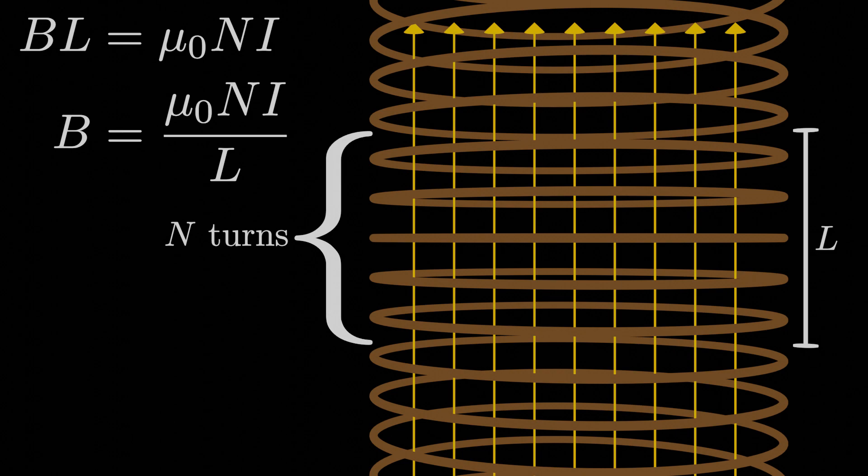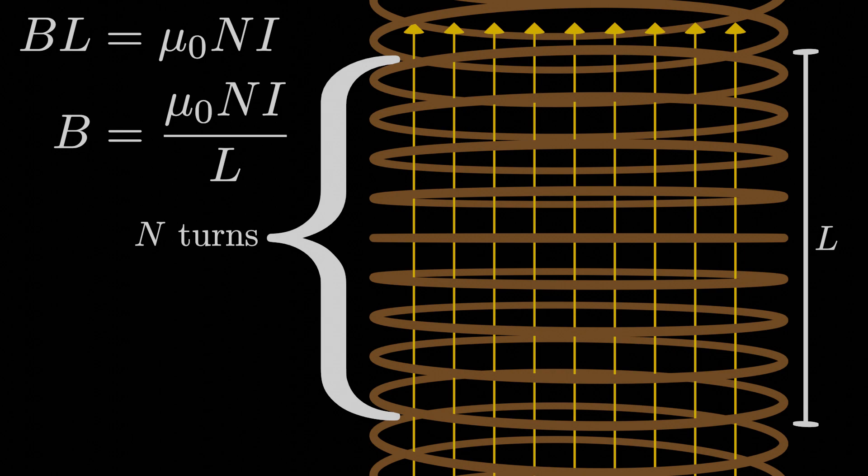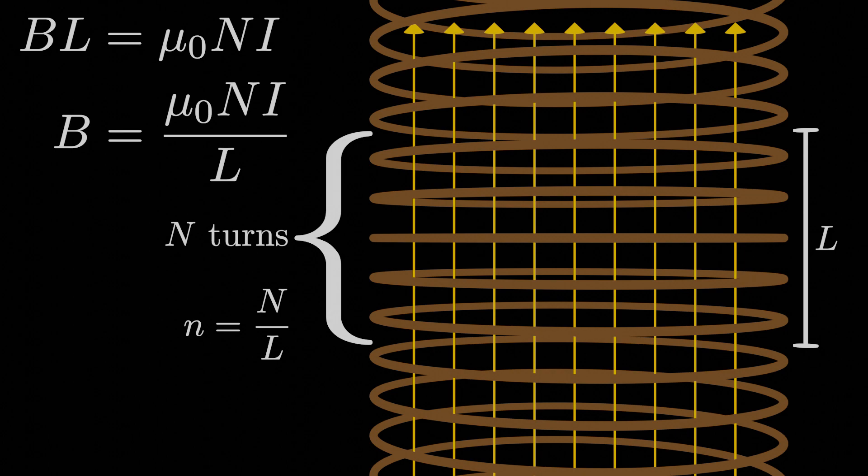We can do even better than this by recognizing that as we increase the length L, the number of turns capital N increases by a proportional amount, so we can call little n the number of turns per unit length on the solenoid, and that's a much more general descriptor of the solenoid than either capital N or capital L is. Then our expression for the magnitude of the magnetic field on the inside of the solenoid is μ₀ times little n, the number of turns per unit length, times the current through the solenoid, and again the magnitude of the magnetic field outside the solenoid is close enough to zero for our purposes that we can just ignore it.